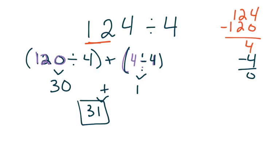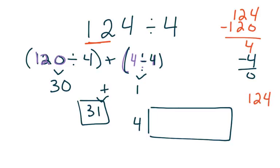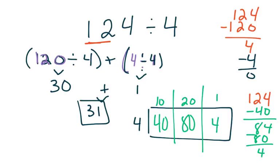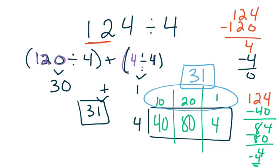I can also use my area model to solve this, or just to check my work. I draw my rectangle with my 4 off to the side, and I take my 124 over here so I can subtract from that total. I need to think about 4 facts getting me close to 124. Maybe I started with 4 times 10, which gives me 40. I subtract 40 from my total and I'm left with 84. I see my 80 there — 4 times 20 gives me 80 — so I subtract my 80 and I'm left with 4. And 4 times 1 gives me 4. Adding my partial quotients on top: 10 plus 20 plus 1 gives me 31 as my quotient, the same as with my distributive property.